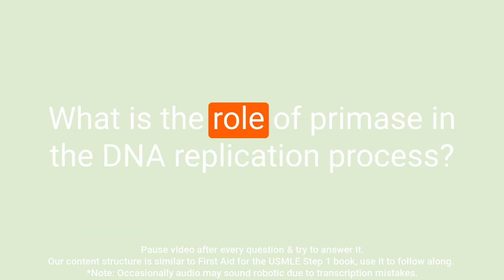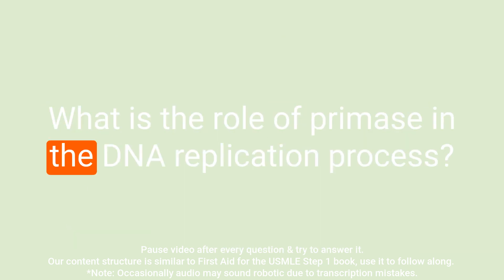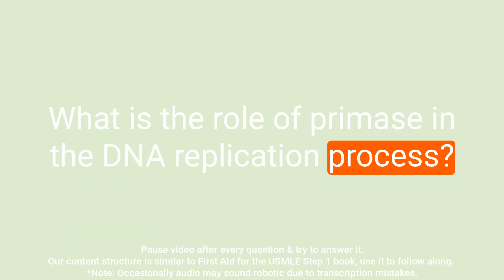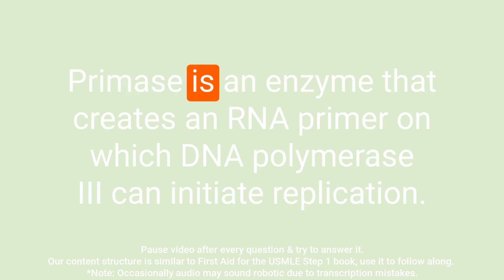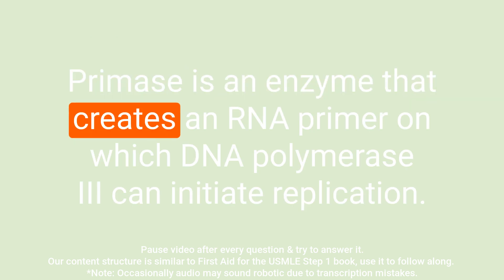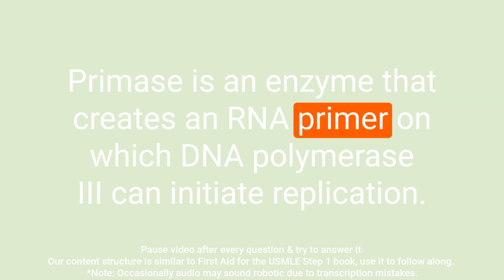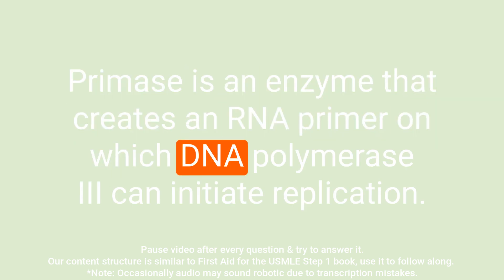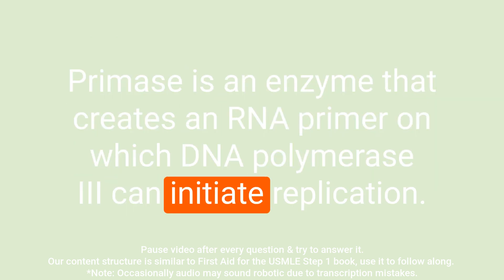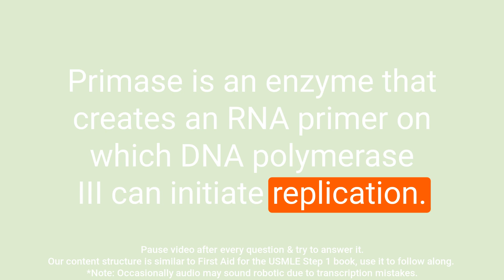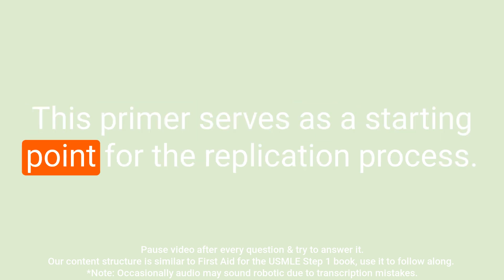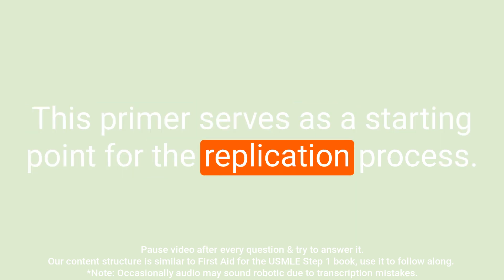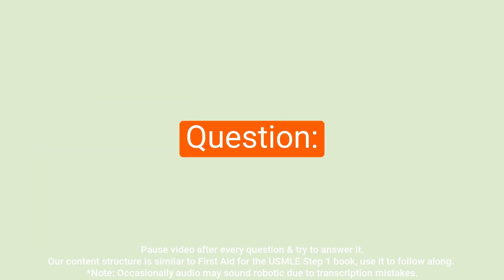Question: What is the role of primase in the DNA replication process? Answer: Primase is an enzyme that creates an RNA primer on which DNA polymerase III can initiate replication. This primer serves as a starting point for the replication process.